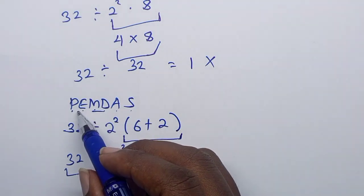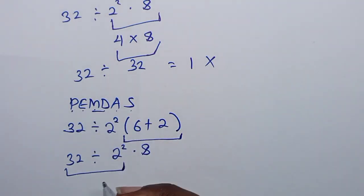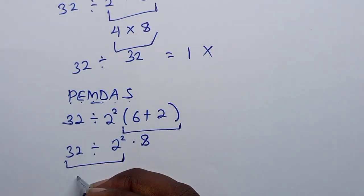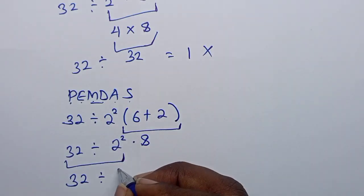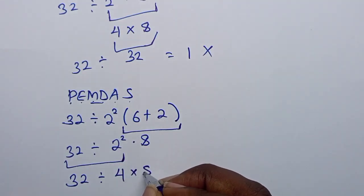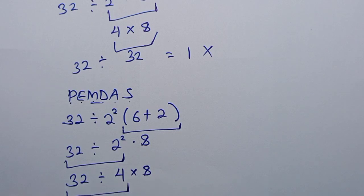So we have 32 divided by 2 to the power of 2, which is 4, then times 8. So now we have to work this out. 32 divided by 4 is 8.